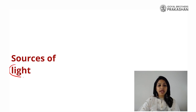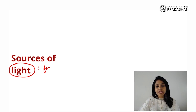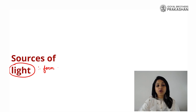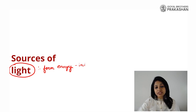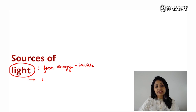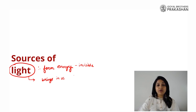Now when I talk about light, what is light? Light is a form of invisible energy. That means we cannot see light. It is a form of energy which is invisible to us. But what is so wonderful about light is that light brings in us the sensation of vision. That means when we look around ourselves, we are able to see everything because of light.